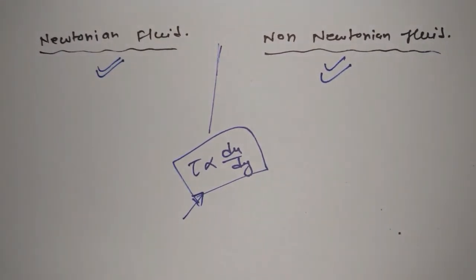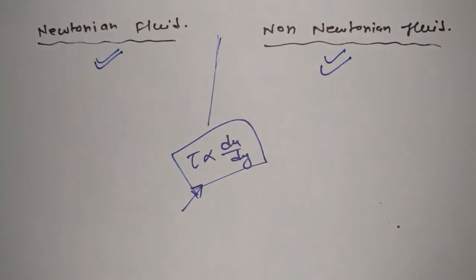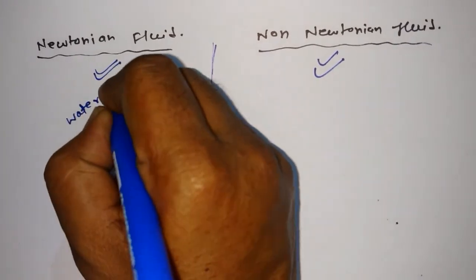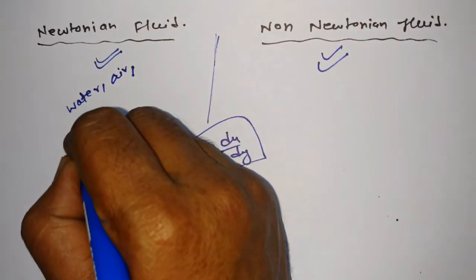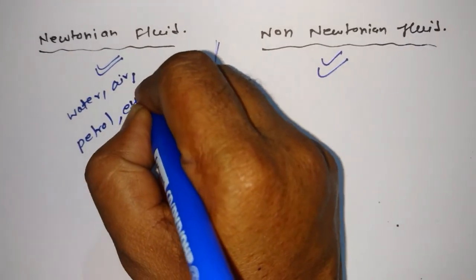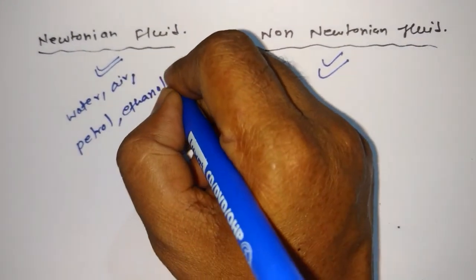Alright, now look at examples. If I will talk about example of Newtonian fluid, those are water, air, petrol, ethanol and benzene.